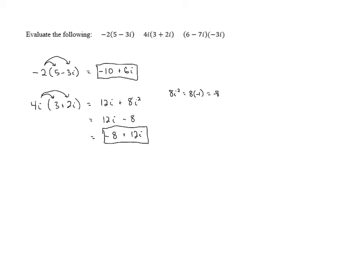And then we have one more problem, 6 minus 7i times negative 3i. We can distribute here as well. The only difference is that we're distributing from the right instead of the left, but that's no real difference. Negative 3i times 6 is negative 18i.